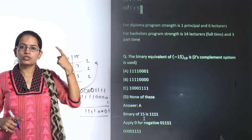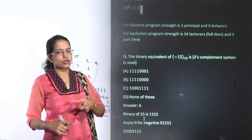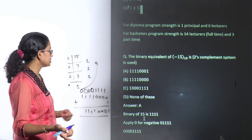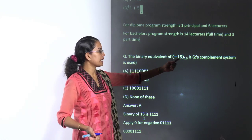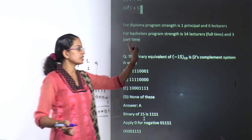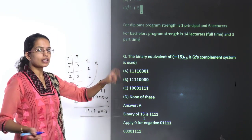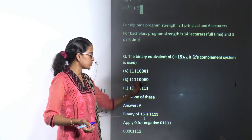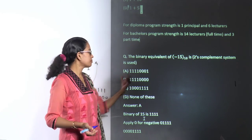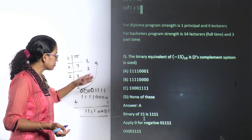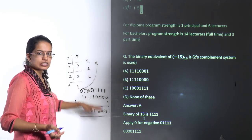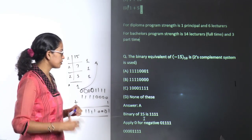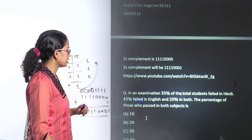Whenever you have a question on 2's complement: first find the 1's complement, then add 1 to get the answer. For a negative binary equivalent, first find the binary for the number, put a 0 at the beginning, pad with extra 0s for an 8-bit machine, find the 1's complement, then add 1.